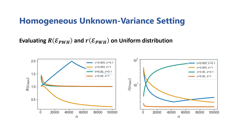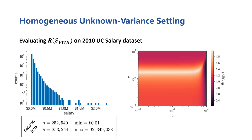We also see that one line drops below a value of 1, indicating that one of the baselines is outperforming it. So we can turn our attention to the chart on the right, and see that even when one of the baselines is outperforming the PWH estimator, it's still performing significantly better than the other baseline. Similarly, we revisit the real-world salaries dataset to evaluate the performance of the PWH estimator. On the right is the heatmap showing the relative improvement of this estimator over the better of the two baselines.